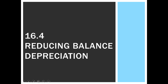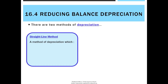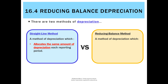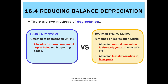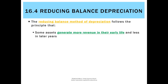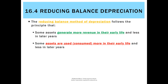Now that we know we're going to need reducing balance depreciation for some of our non-current assets, we're going to look at how it is different to straight line. Straight line was a method which charges or allocates the same amount of depreciation every reporting period, whereas reducing balance actually charges more depreciation in the early years of an asset's useful life and less in the later years. This follows the principle that some assets will generate more revenue in their early life and less in later years, and therefore those assets will be used up or consumed more in their early life than in their later years.